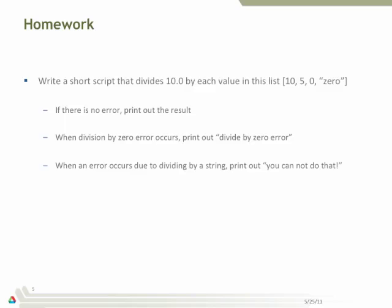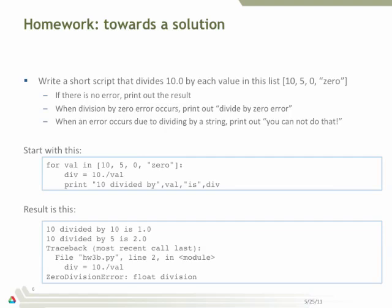So this is sort of a process. First thing I did was to write a very short script that does everything without the error handling. So then I can see what's going on. So I write this short script for val in this list, and then I do the division, 10 divided by the value here, and then I print it.